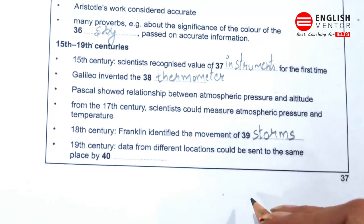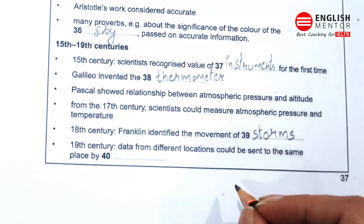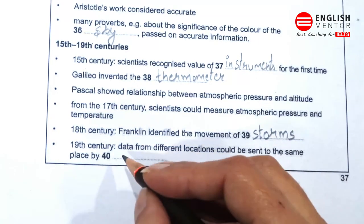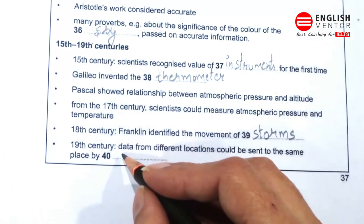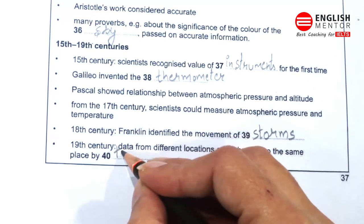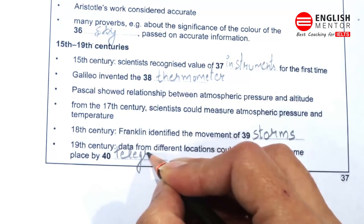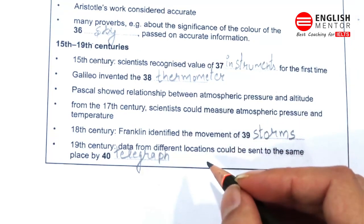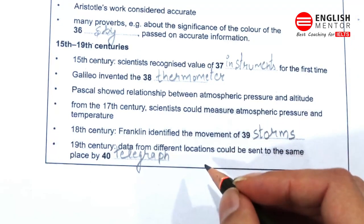In addition to new meteorological instruments, other developments contributed to our understanding of the atmosphere. People in different locations began to keep records, and in the mid-19th century the invention of the telegraph made it possible for these records to be collated. This led, by the end of the 19th century, to the first weather services.